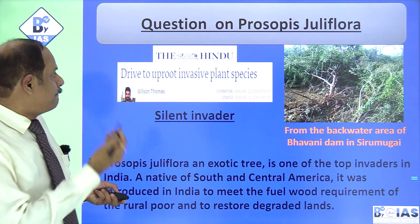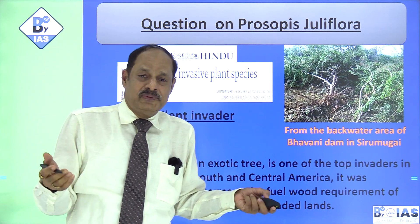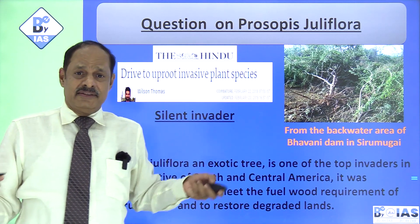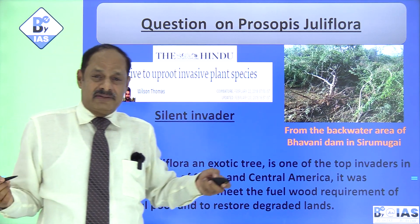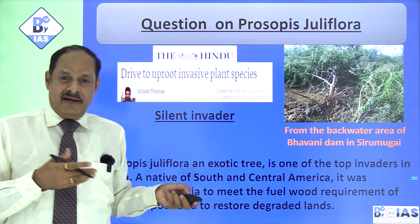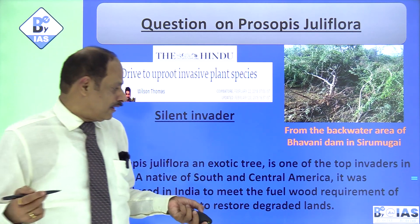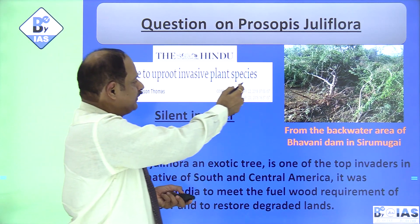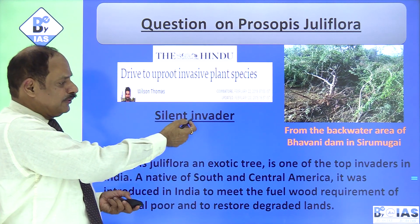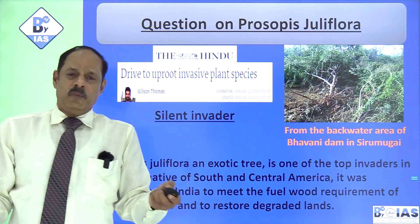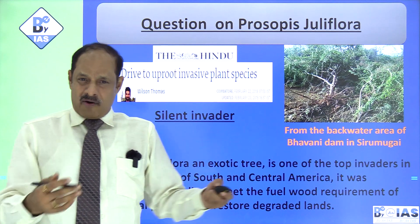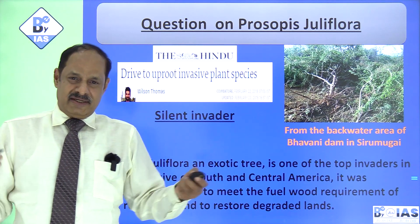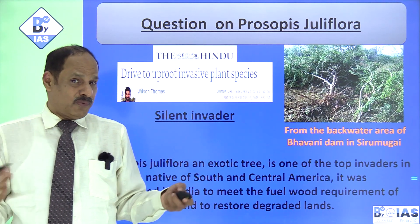Similarly, there was a question on Prosopis juliflora — a species probably no one would have noted. This is an invasive species introduced from central Europe and the Asian highlands to India, and it was creating a problem to the Indian terrain. It was in the news as part of a drive to uproot invasive plant species. This is how understanding news-based topics helps identify what is important for the exam.